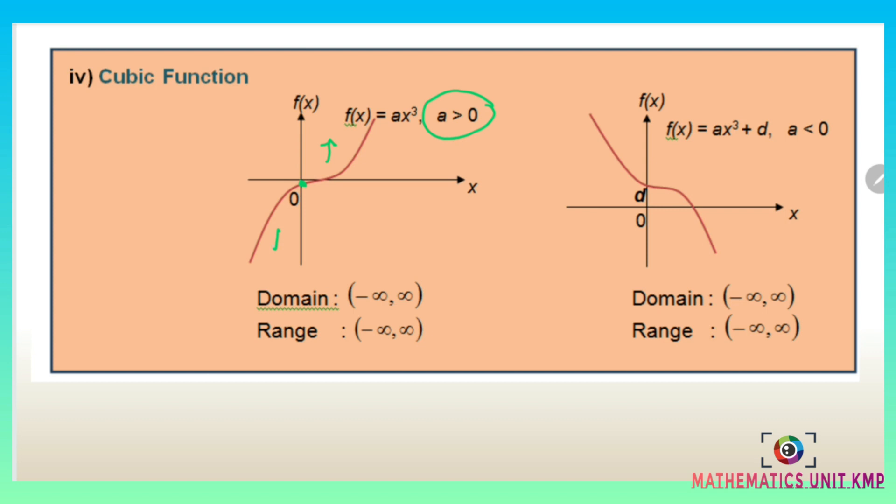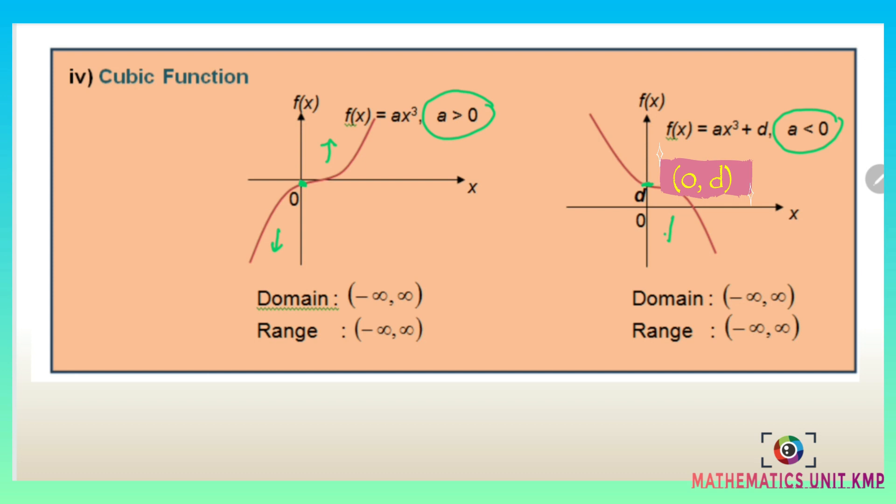For the second graph, if f(x) equals ax³ and a is less than 0, the inflection point is at (0, 0). At the right, the graph is concave down and at the left it is concave up.